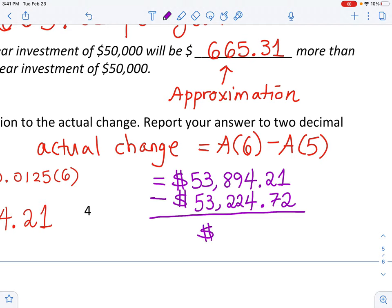Okay, so let me go ahead and subtract these two purple numbers. And that should come out to be approximately the same as what we got using the derivative. All right, let me subtract then. 53,894.21 minus 53,224.72.